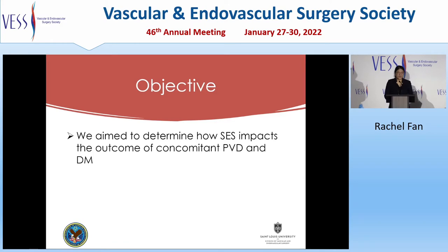We aim to determine how socioeconomic status as an independent variable impacts the outcome of concomitant peripheral vascular disease and diabetes. Such an investigation is important because it can help identify high-risk groups for amputation which can be targeted for early prevention and intervention. Understanding the impact of socioeconomic status on future lower limb amputation can guide health policies and future research.